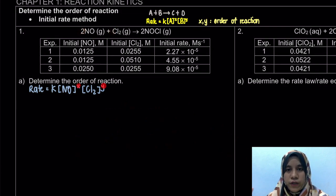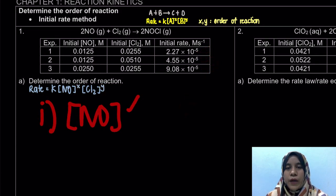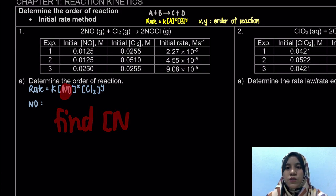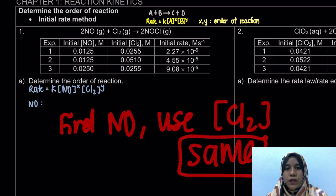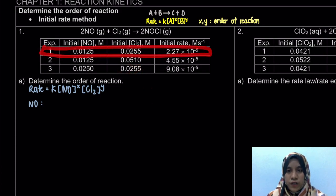So how to find out the order of the reaction? We're going to use the initial rate. We're going to divide the values. First, I'm going to find out the order of reaction with respect to NO. To find NO, what we're going to do is use the same concentration of Cl2, so that when we divide it, we can cancel it out. From the information here, Cl2 is the same in experiment 1 and experiment 3. So I'm going to divide them.